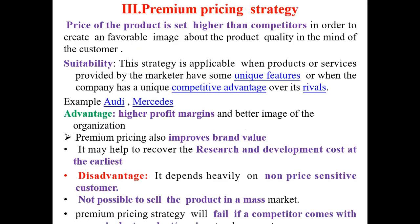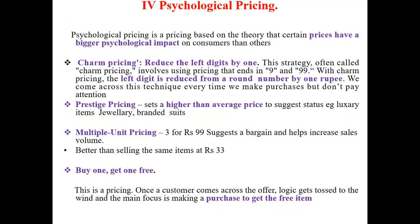Next is the psychological pricing strategy. Here the marketers play with the psychology of the consumer. There are different categories: charm pricing, prestige pricing, multiple unit pricing, and buy one get one free. Charm pricing involves using prices that end in nine or ninety-nine — instead of keeping the price at 300 the price is kept at 299. Though there is only a difference of one, the customer considers it as 299, not 300.